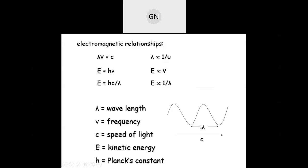This leads to the corollary that frequency and wavelength are both properties of waves and are inversely proportional. Lambda is inversely proportional to frequency. Removing the proportionality: λ × ν equals a constant. The product of the wavelength and frequency of any electromagnetic radiation is always a constant — the velocity of light.